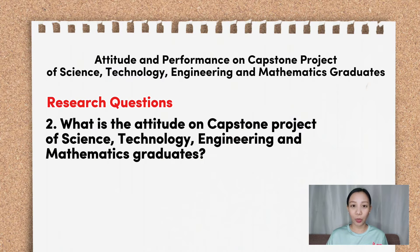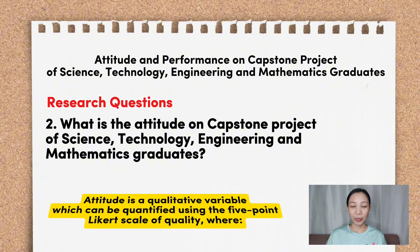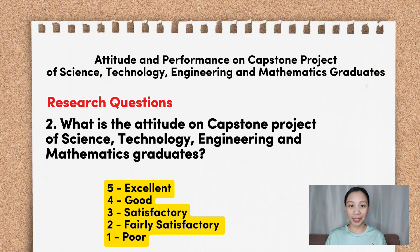Perhaps you also want to know how we quantified attitudes. Since it is an example of a qualitative variable, we quantified attitude with the use of the 5-point Likert scale of quality, in which 5 is excellent, 4 is good, 3 is satisfactory, 2 is fairly satisfactory, and 1 is poor.